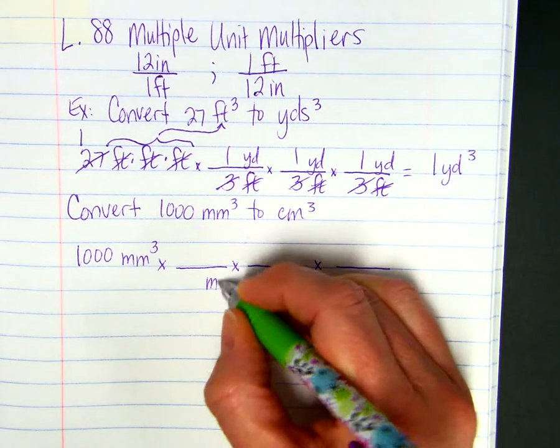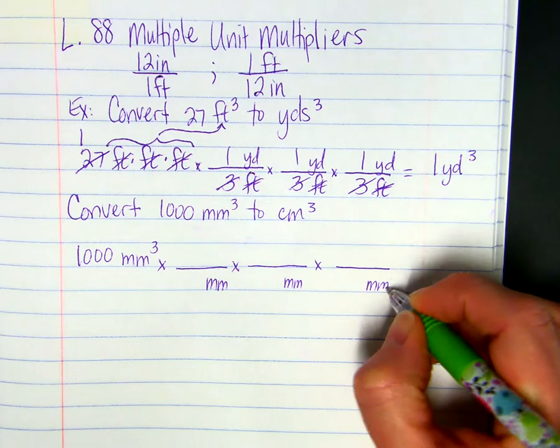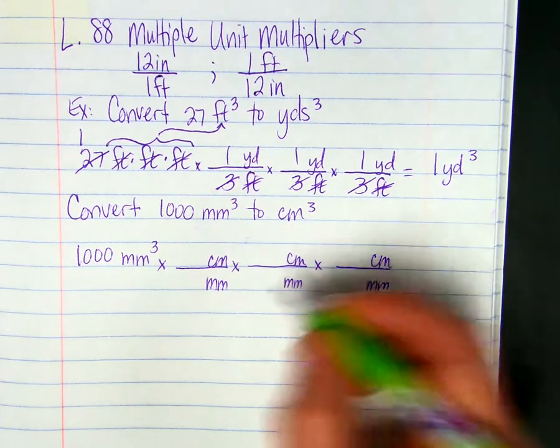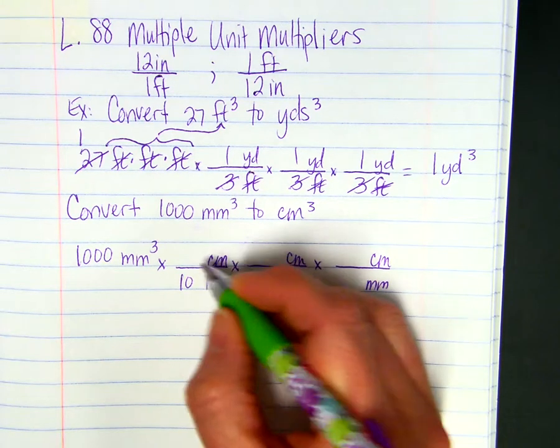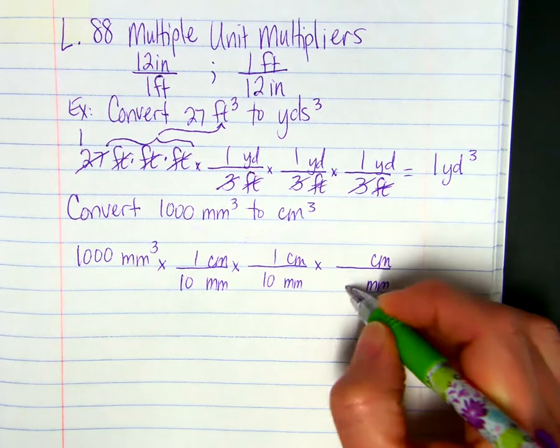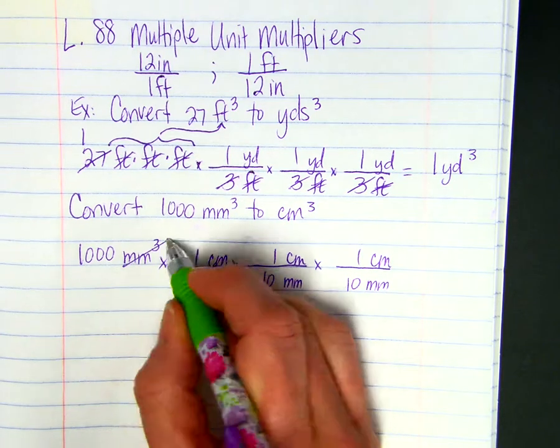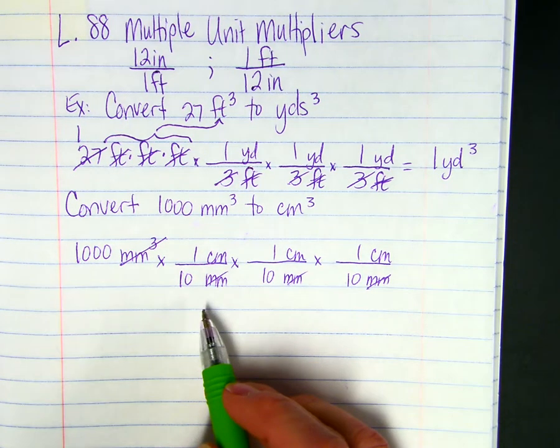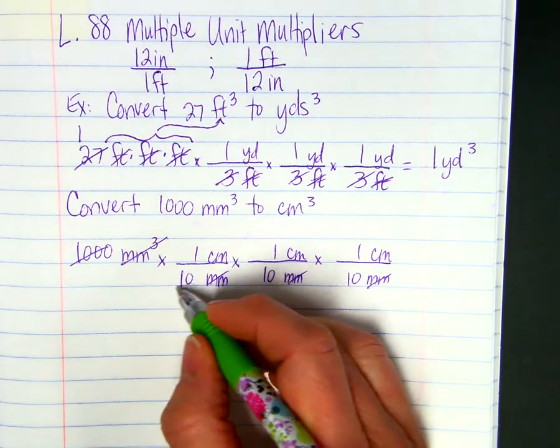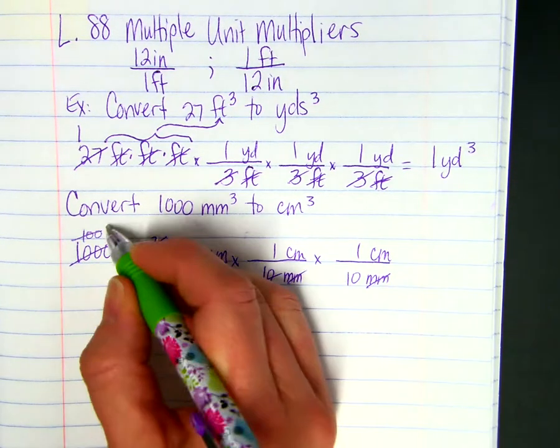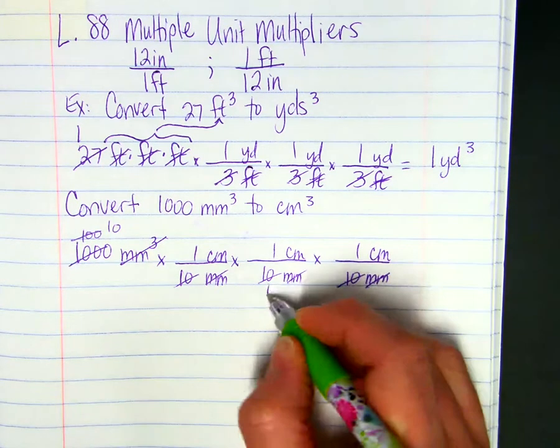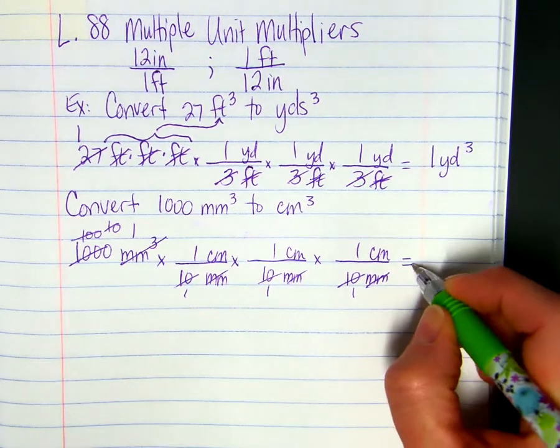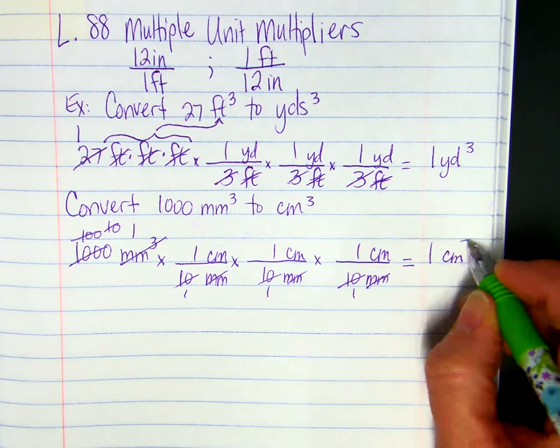We'll put millimeters in the denominator, changing to centimeters, so that goes in the numerator. There's 10 millimeters in one centimeter. We can cancel all three millimeters, and we need to divide 1,000 by 10 to get 100, divide it again by 10 to get 10, and divide it again by 10 to get 1. So 1,000 millimeters cubed is equal to 1 centimeter cubed.